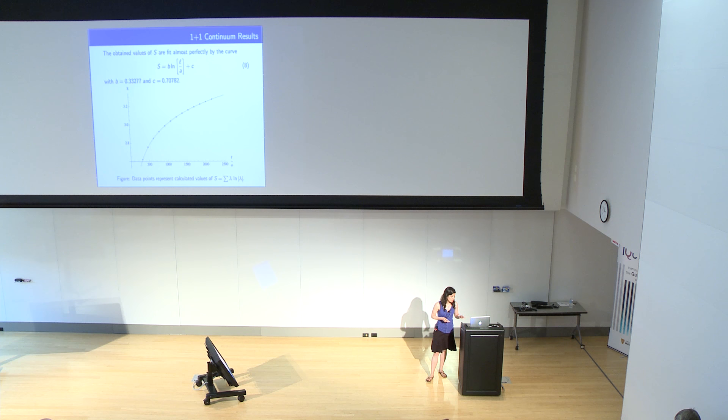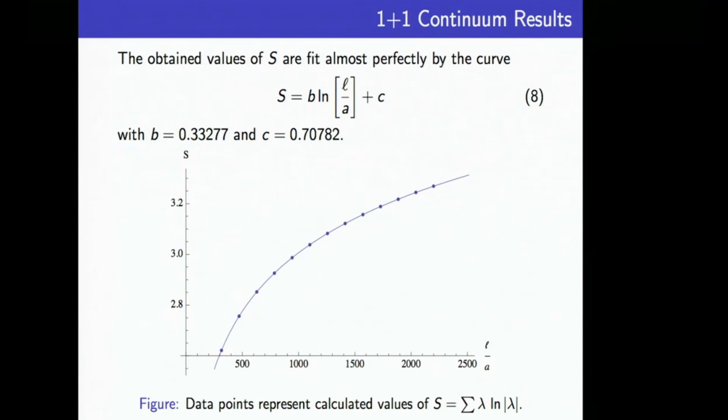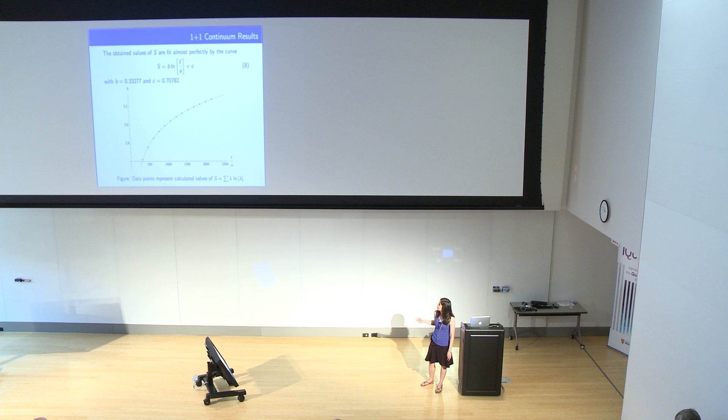This is the final result for the entropy, and you can see that it fits almost perfectly the expected result of logarithmic scaling with the cutoff with a one-third coefficient. So this is the 1+1 version of the area law, so things seem to be working as expected with this spacetime formula in the continuum.